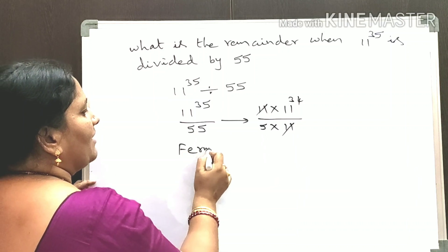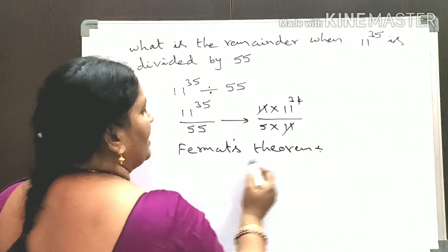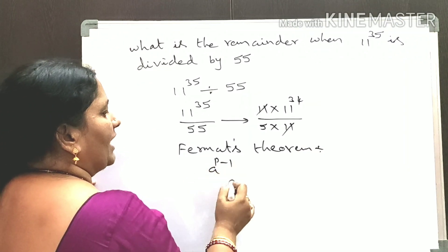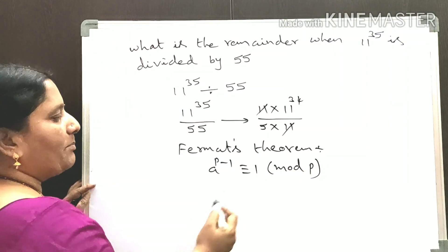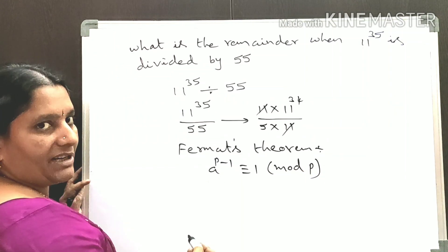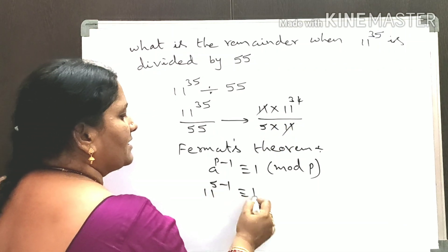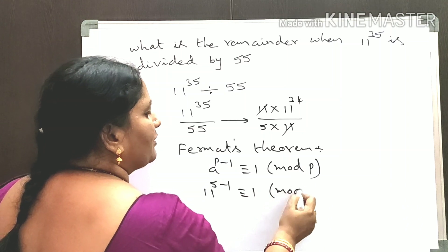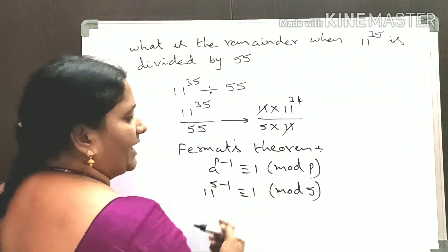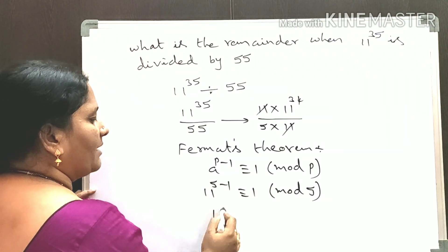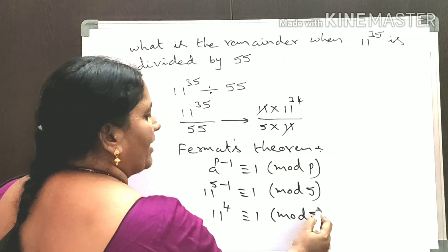We are going to use Fermat's theorem. According to Fermat's theorem, a to the power of p minus 1 is congruent to 1 modulo p, when p is a prime number. Since 5 is a prime number, 11 to the power of 5 minus 1 is congruent to 1 modulo 5, which gives us 11 to the power of 4 is congruent to 1 modulo 5.